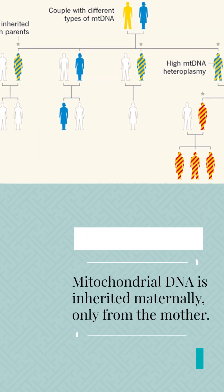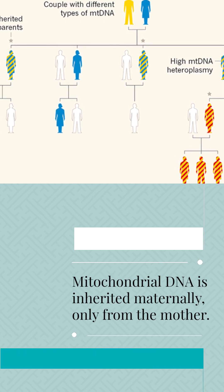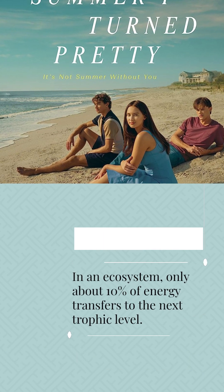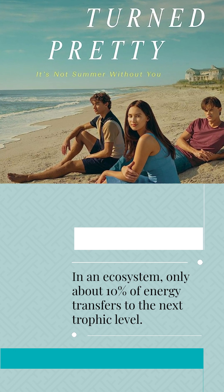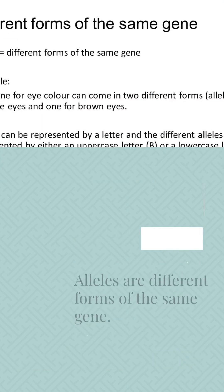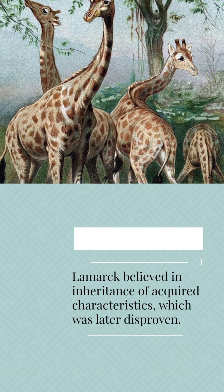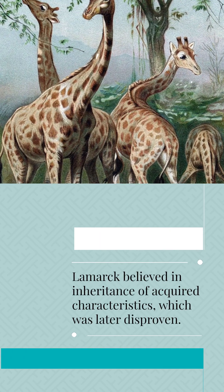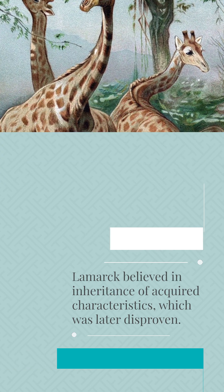Mitochondrial DNA is inherited maternally, only from the mother. In an ecosystem, only about 10% of energy transfers to the next trophic level. Alleles are different forms of the same gene. Lamarck believed in inheritance of acquired characteristics, which was later disproven.